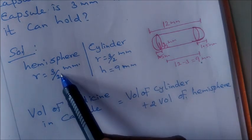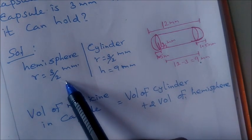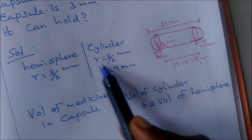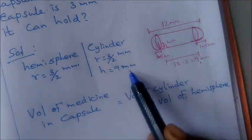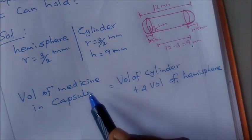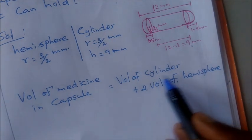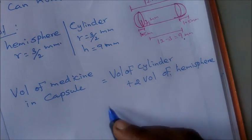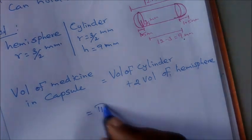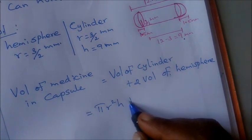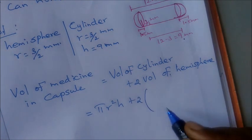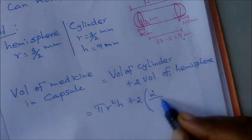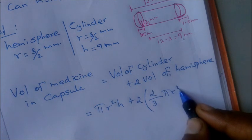Hemisphere has radius of 3 by 2, so we'll use fractions. Radius is 3 by 2 mm for cylinder, height is 9 mm. Volume of medicine in the capsule is volume of cylinder plus 2 times volume of hemisphere. Volume of cylinder formula pi r squared h plus 2 times volume of hemisphere is 2 by 3 pi r cube.